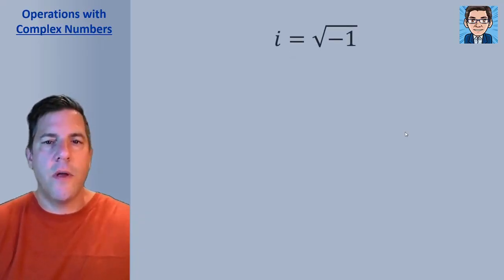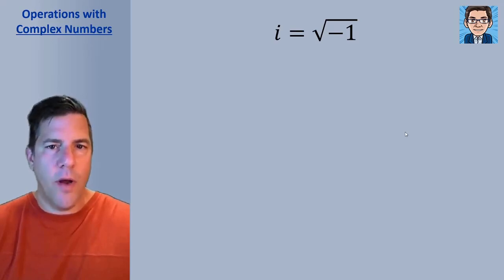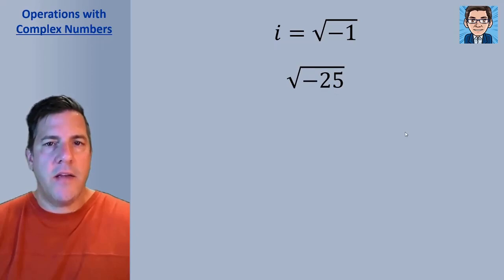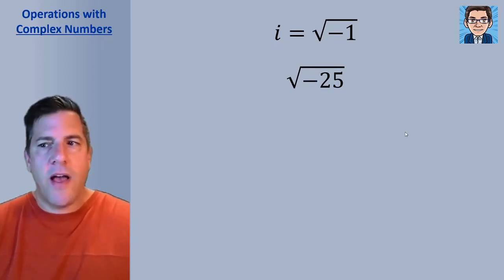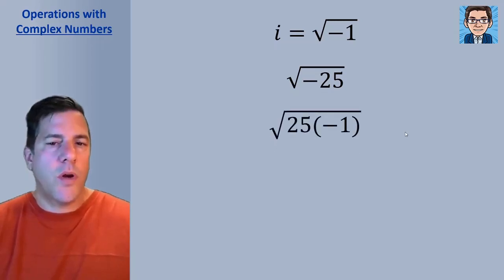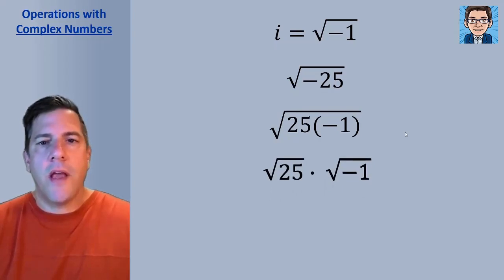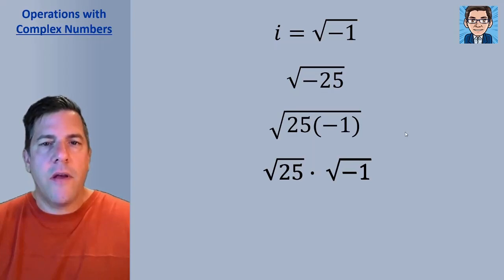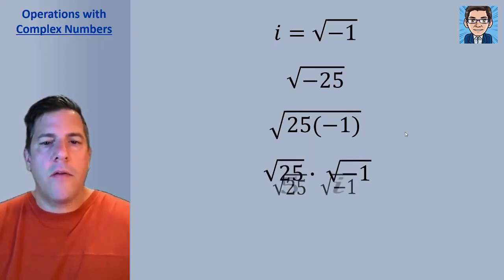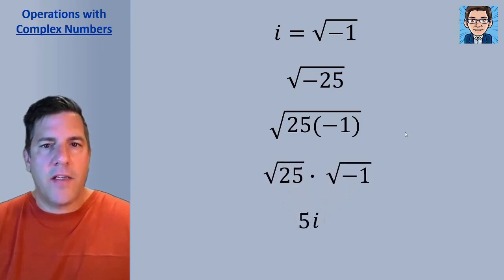i is defined as the square root of negative 1, with i standing for imaginary. That allows us to take the square root of something like negative 25. We can split negative 25 into 25 and negative 1, then into the square root of 25 and the square root of negative 1. The square root of 25 is 5, and the square root of negative 1 is i, so the answer becomes 5i.